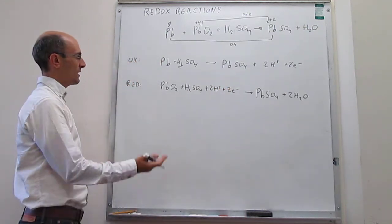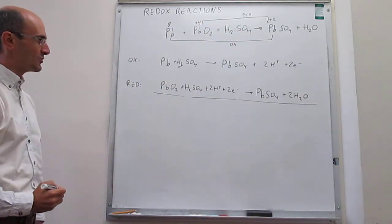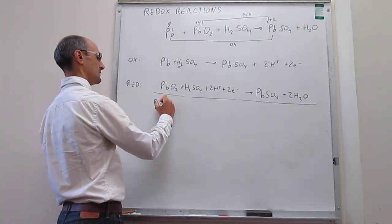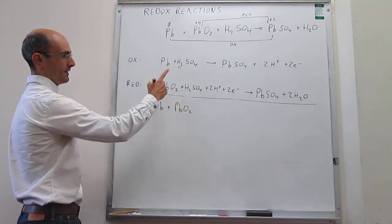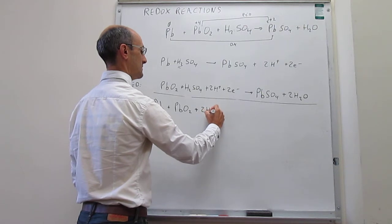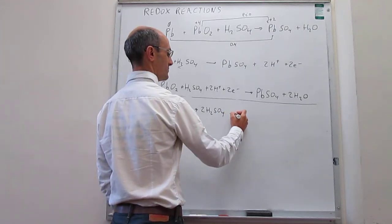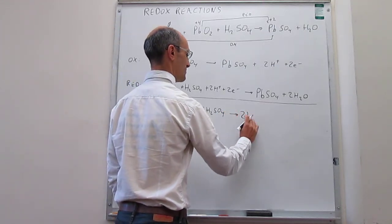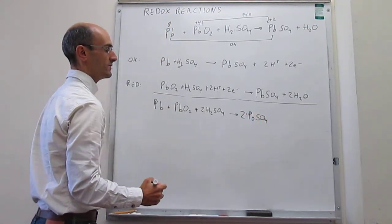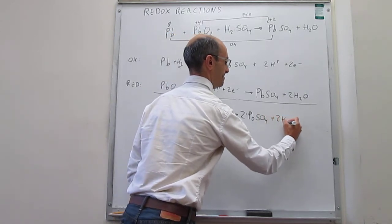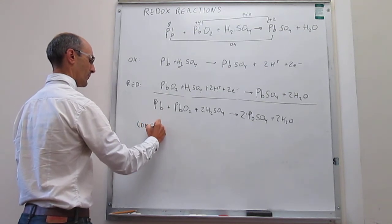We balance the charge by adding two electrons to the reduction half-reaction. Now we have both the oxidation and reduction half-reactions. Adding them up, the protons and electrons cancel, giving us: lead plus lead 4 oxide plus two sulfuric acids generating two lead 2 sulfate and two molecules of water. That is the balanced comproportionation reaction.